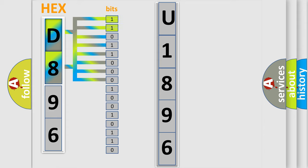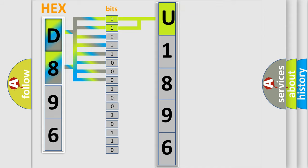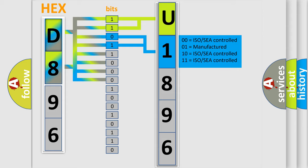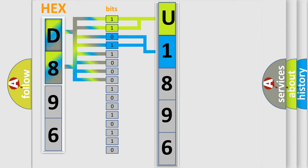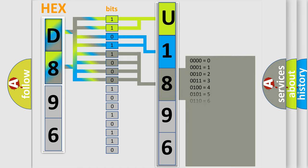The bit states are: zero (low level) and one (high level). By combining the first two bits, the basic character of the error code is expressed. The next two bits determine the second character. The last bits of the first byte define the third character of the code.